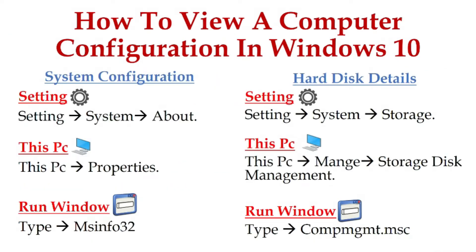There are several ways we can use in order to view our basic computer configurations. Some of them are: using Settings, using This PC, or if you wish to see the entire configuration of your computer, just go to the Run window and type msinfo32.